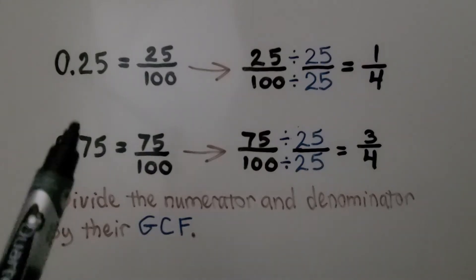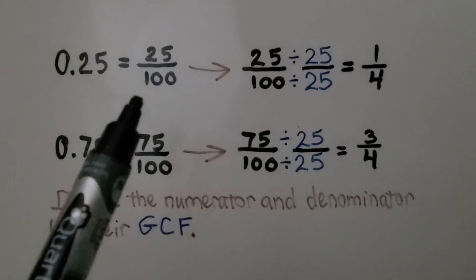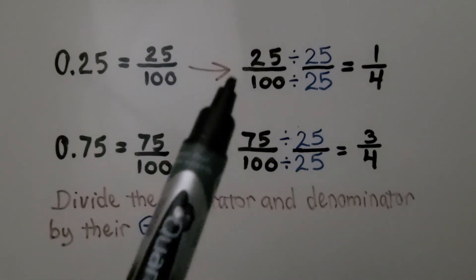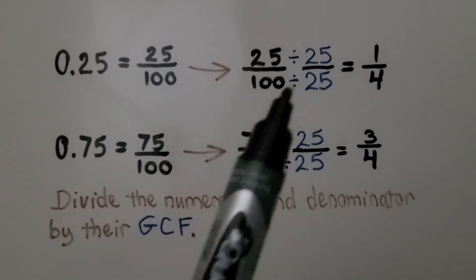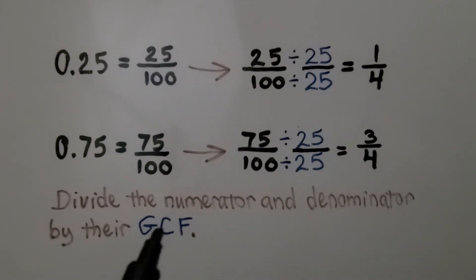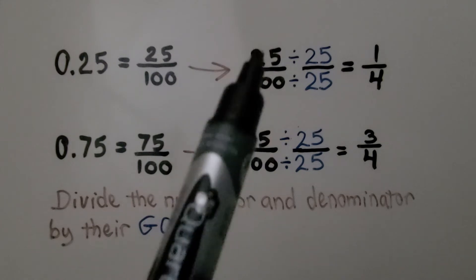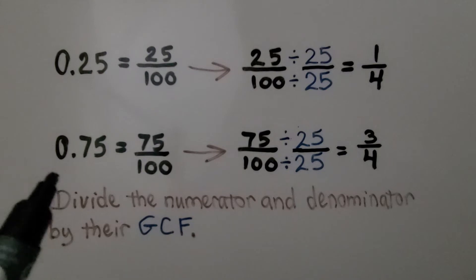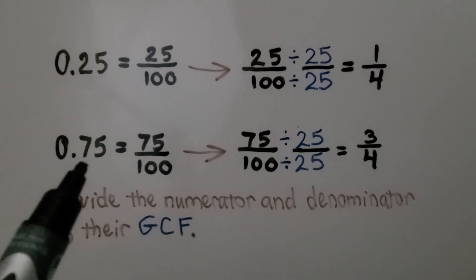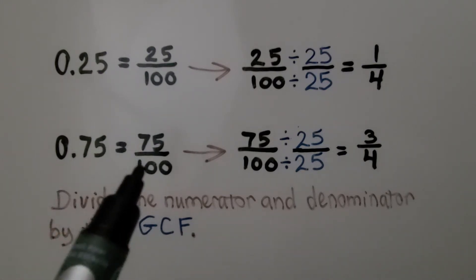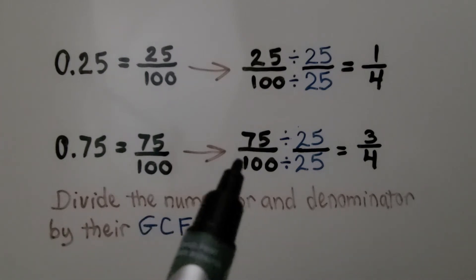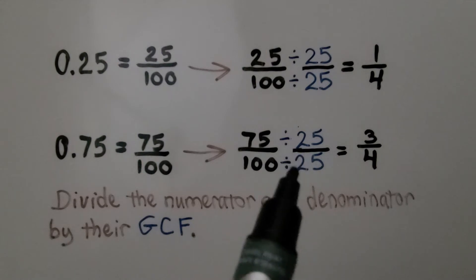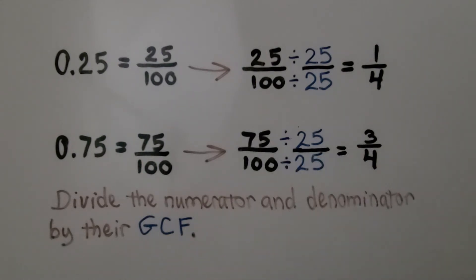The decimal 0.25 is equal to the fraction 25 one-hundredths. We can simplify it by dividing the numerator and denominator by the same number, 25 — that's the greatest common factor — and it simplifies to 1 fourth. The decimal 0.75 is equal to the fraction 75 one-hundredths. We can simplify this by dividing the numerator and denominator by their GCF, 25, and we get three-fourths.